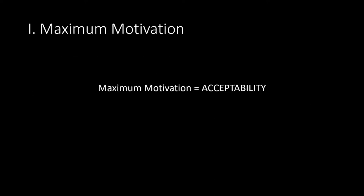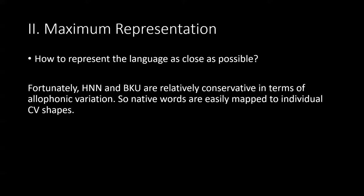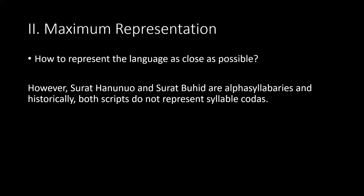To summarize maximum motivation: it is essentially about acceptability in the community. For maximum representation, we usually frame this as how to represent the language as close as possible. Fortunately, Hanunuo and Buhid are relatively conservative in terms of allophonic variation — usually you have one-to-one mapping. Native words are easily mapped to individual script shapes because this is an alpha syllabary, with a consonant and a default vowel for each basic form. However, Surat Hanunuo and Surat Buhid, being alpha syllabaries, do not represent syllable codas in the traditional way.